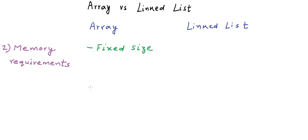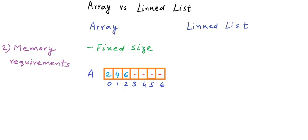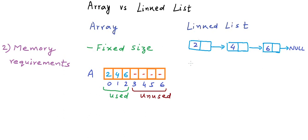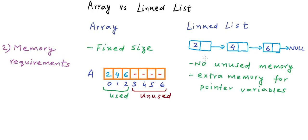What we typically do is create a large enough array, where some part stores our list and some part is vacant so we can add more elements. For example, an array of seven integers with only three integers in the list leaves four positions unused with garbage values. With a linked list, there is no unused memory — we ask for memory one node at a time with no reserved space. However, we use extra memory for pointer variables, and this extra memory requirement cannot be ignored.